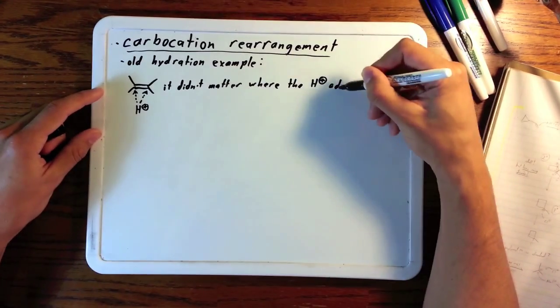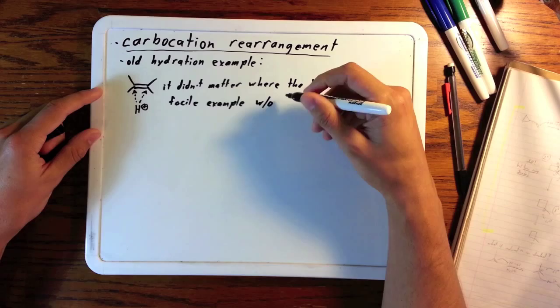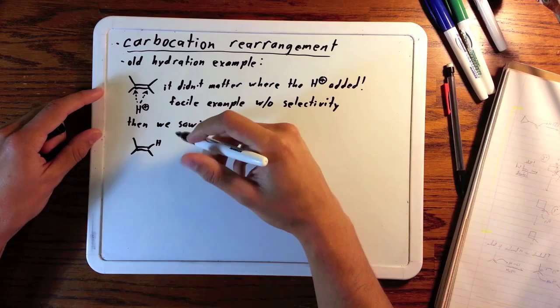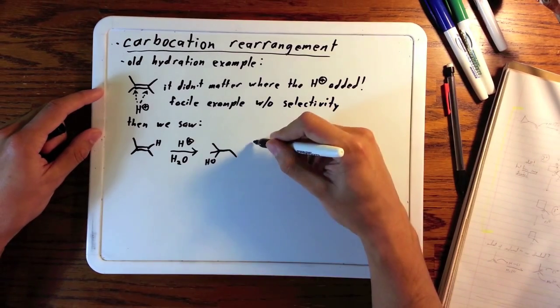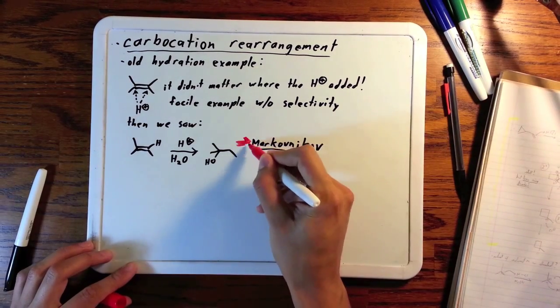This was a pretty facile example because we weren't considering selectivity at all. Then we looked at what would happen on the addition to an alkene with three methyls and a hydrogen attached. We learned about Markovnikov selectivity - the H would stick with the side that had more H's already.